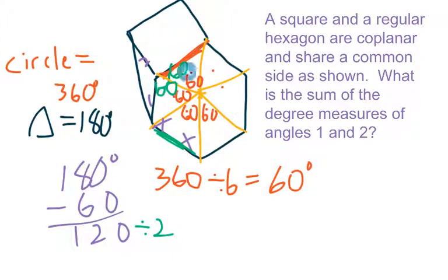And if these are both 60, that's 120. And I know this is a square, so that means this is 90. So I really have 120 and 90 that I'm adding up. I get 210 degrees.